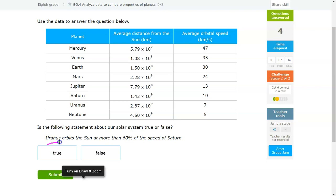So for this question, we're looking at Uranus and we're looking at the speed of Saturn. So it's saying Uranus orbits the sun at more than 60% of the speed of Saturn. So Saturn's speed is 10. Uranus's speed is 7. 60% of 10 is just 10 times 0.6, which would get you 6. So if Uranus's speed is more than 6, then you should be able to figure out what the answer for that one is.